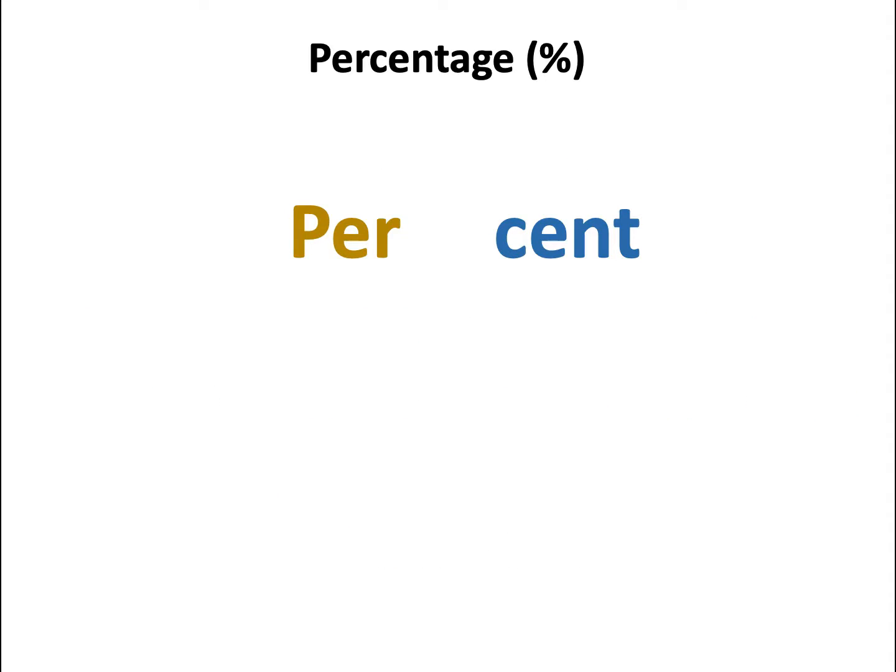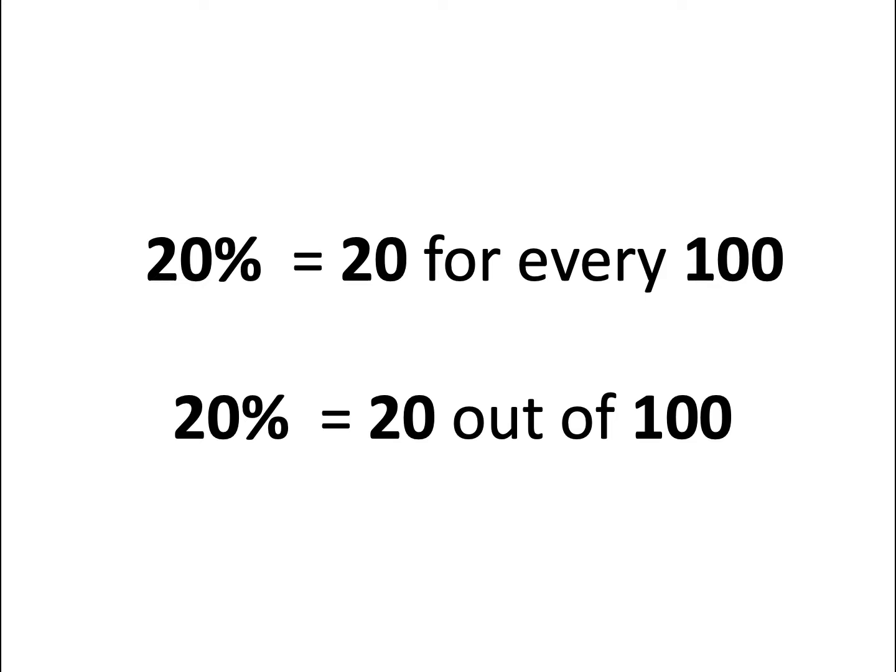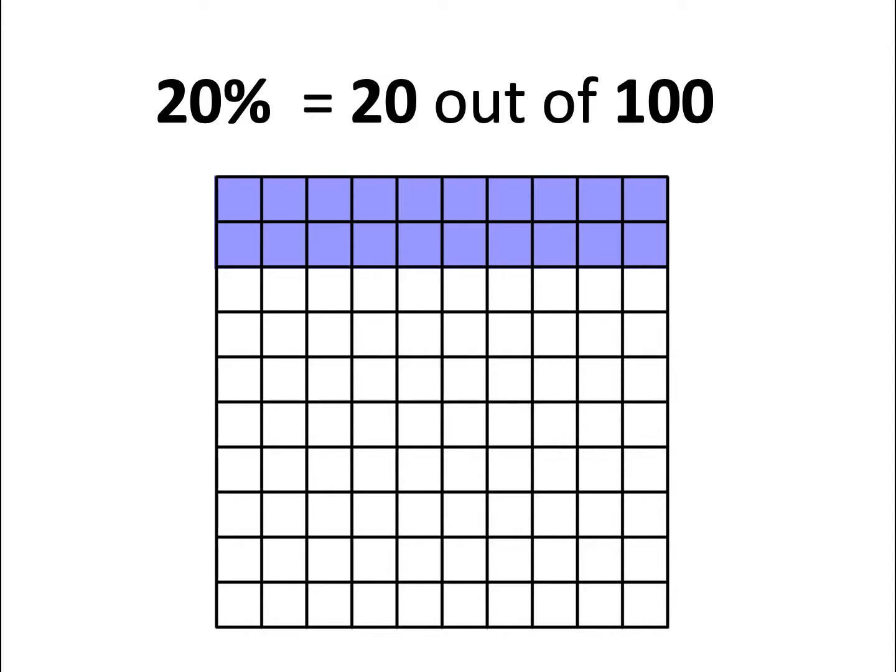Combining the two words, percent means for every 100 or out of 100. So when you see, for example, 20 percent, that means 20 for every 100. What does that look like? Let's say we have 100 squares. To represent 20% or 20 for every 100, we shade in 20 squares. There are 20 squares for this group of 100 squares.